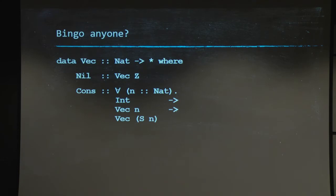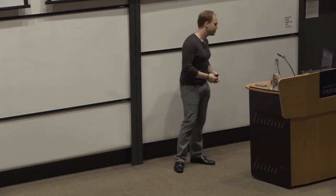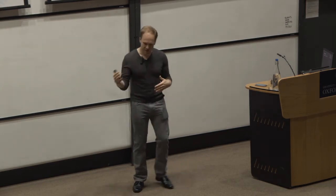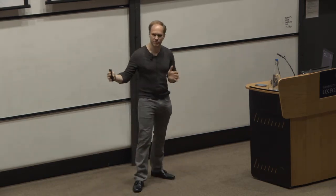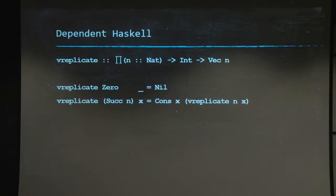But there are some functions you want to write on that type that you cannot write. Here is the replicate function. What does it do? Well, it takes a size as input, as well as an element, and it's going to replicate that element in a vector of the size you've specified. Here is how we want to write it. Aside from the fact that it's dependently typed, it's a fairly simple recursive function. It should be very similar to the list one.